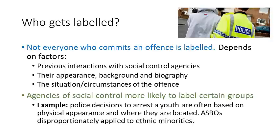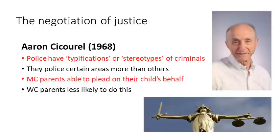We therefore need to consider who exactly gets labelled in our society, because not everyone who commits an offence is labelled. It depends on a range of factors: previous interactions an individual may have had with social control agencies such as the police and courts, their appearance, their background and biography, and the situation and circumstances of the offence. Agencies of social control are more likely to label certain groups — they often act on what we call typifications. For example, police decisions to arrest a young person are often based on physical appearance and where they are located. ASBOs are disproportionately applied in the UK to ethnic minorities, young men, and the working class.